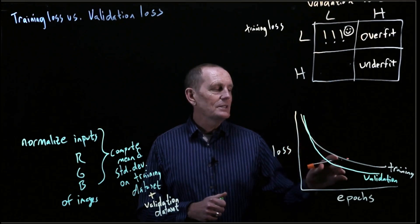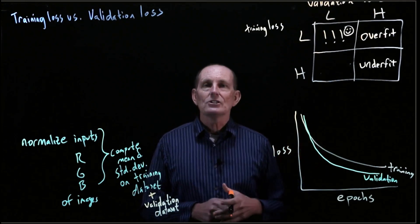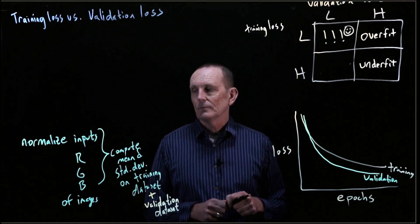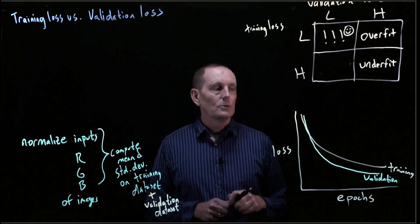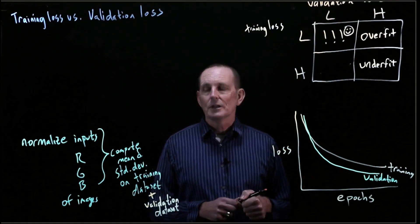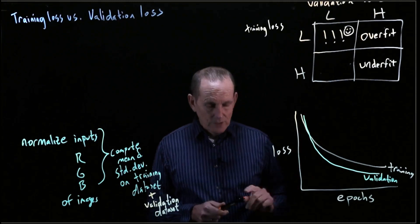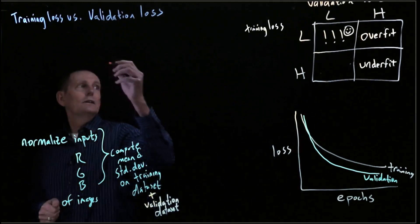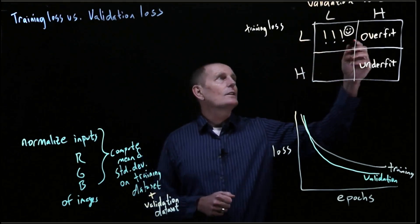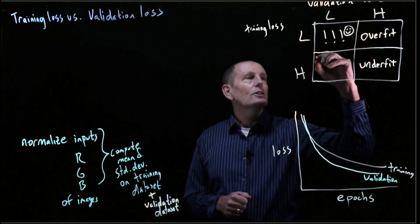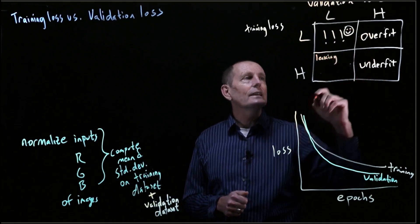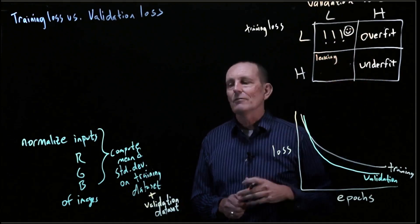That would be an example where the validation loss would be lower than it should otherwise be, so it will not be a good estimation of your ability to generalize. Possibility number one for why we get high training loss and lower validation loss: leaking from validation.